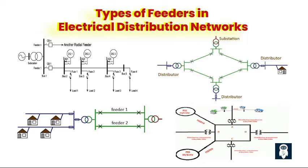Third, a parallel feeder consists of multiple feeders connected in parallel to supply power to a common set of loads. It helps distribute the electrical load across multiple paths, allowing for load sharing and redundancy. Parallel feeders are employed where power demand exceeds the capacity of a single feeder or for providing backup power options. Fourth, a loop feeder is a configuration where multiple feeders are interconnected to form a looped network, providing flexibility, reliability, and fault tolerance, reducing the impact of faults and improving reliability.